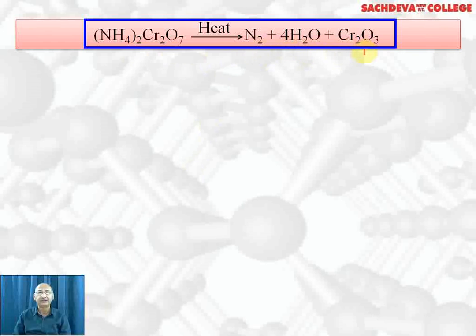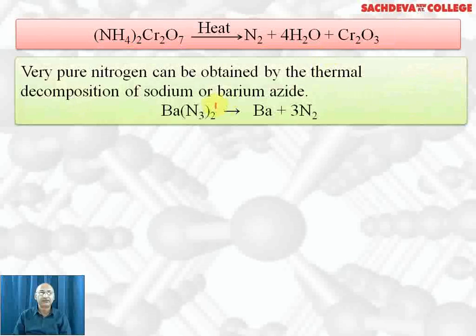On heating ammonium dichromate, it gives nitrogen plus 4 water plus chromium trioxide, which is a green residue. In this reaction, sparks are produced, which you see in the bursting of a volcano-like display.